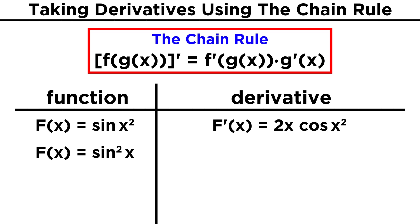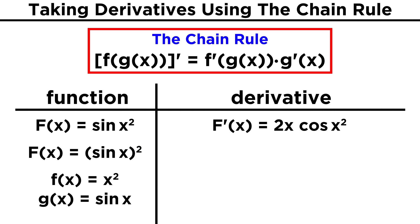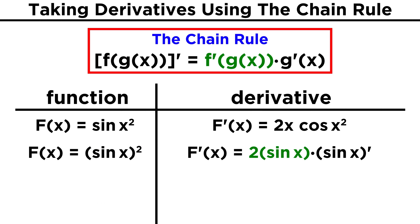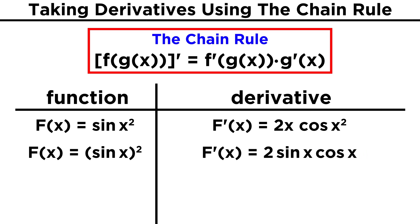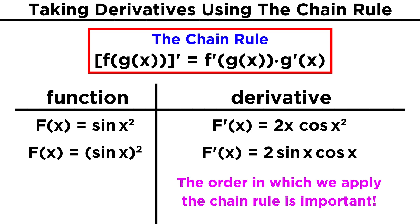Just to see the reverse scenario, what if we have sine squared of x? Let's recall that this notation implies that the function sine of x is being squared, so we can also express that with sine x in parentheses being raised to the second power. Now the situation is reversed, and the outer function involves squaring the input, while the inner function is sine. So let's take the derivative of the outer function, which means pulling the two down here, to get two sine x. But then we multiply by the derivative of the inner function, and the derivative of sine is cosine, so we get two sine x cosine x. These two examples should prove to you that it is indeed important the order in which we apply the chain rule, as we do get different answers.